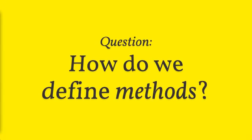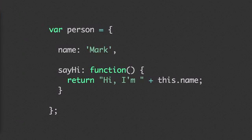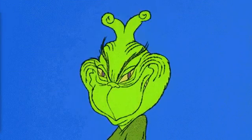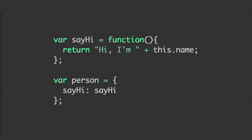How do you define methods in JavaScript? The answer, of course, is once again with functions — we don't really have a special method type that's separate from functions. Ultimately, a method is just a function that happens to be on an object. In this case, we have a person object defined on the fly, and it has a sayHi method — but look at it again: it's really just a function. So if everything is implemented as a function in JavaScript, you've really got to ask yourself what happens if we start to do some unexpected things.